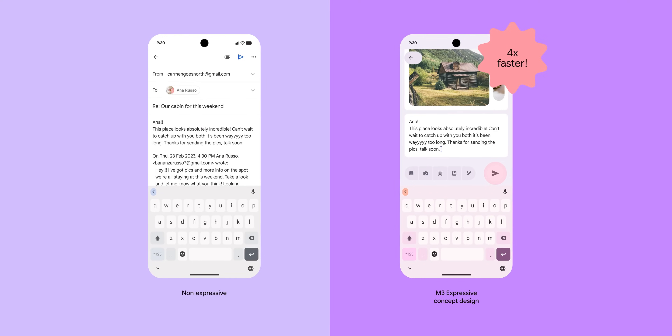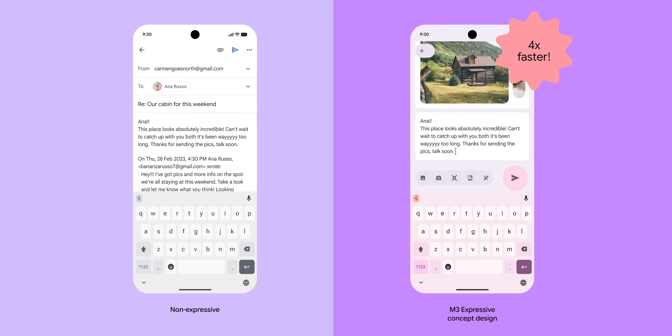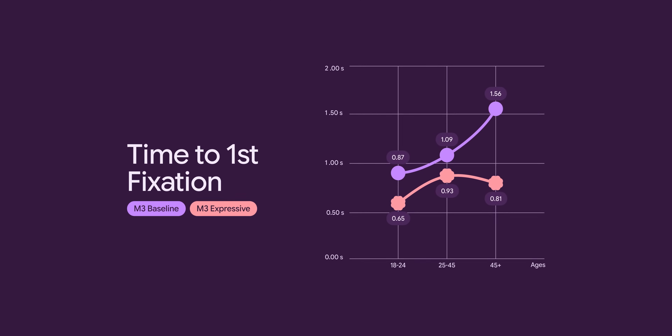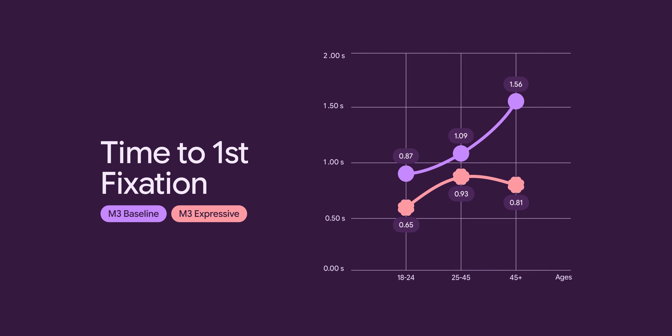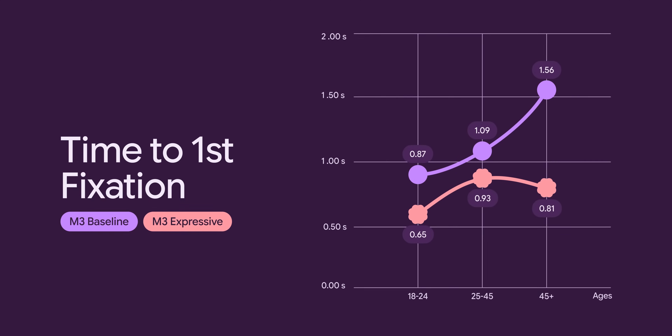One of the key takeaways from Google's research is their claim that expressive designs are simply easier to use — they help you quickly spot the key action on each screen. They throw around some impressive numbers: participants in their studies were apparently able to spot key UI elements up to four times faster with expressive designs applied. They're also saying the time it takes to tap on key actions decreased by seconds across various tested designs. In the world of user experience, seconds matter.